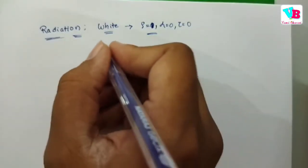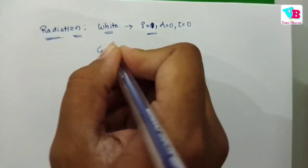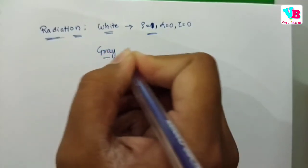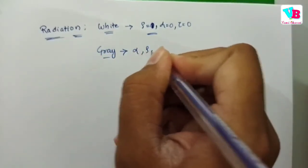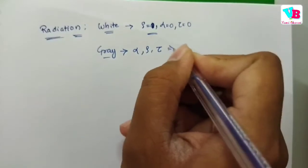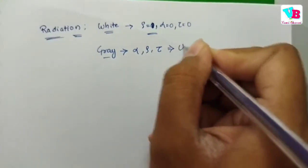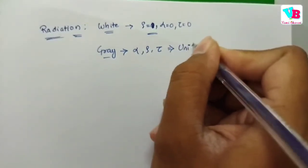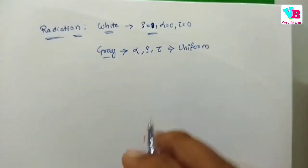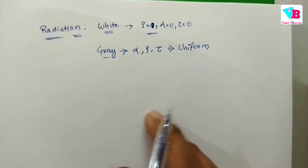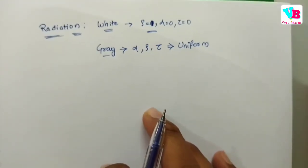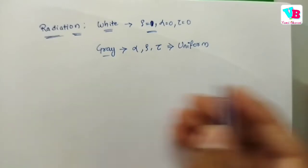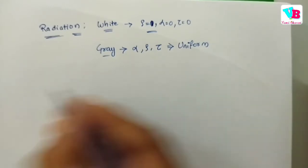Next is the grey body. A grey body is one where alpha, rho, and tau are uniform. Grey body is uniform. In terms of absorptivity, the temperature and wavelength vary. So these are different types of bodies.